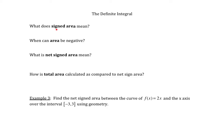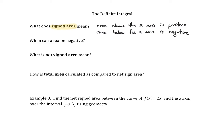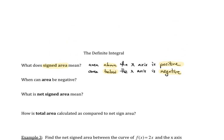Let's talk about signed area. What does signed area mean exactly? Basically, area above the x-axis is positive, and area below the x-axis is negative area. So I'm just going to highlight this to emphasize: above the x-axis means positive, below the x-axis means negative. I can draw you a picture so that you understand a little bit better what I mean.